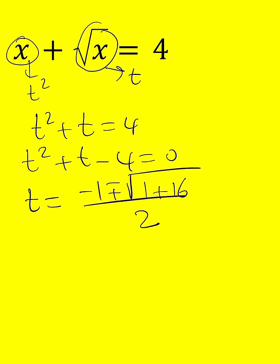So from here you get two solutions, but guess what? One of them is negative and you don't want that because t must be positive. Remember t is equal to square root of x. So we're going to take the positive solution, which is root 17 minus 1 divided by 2.